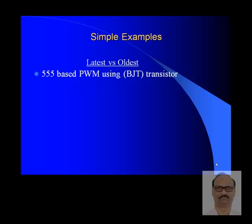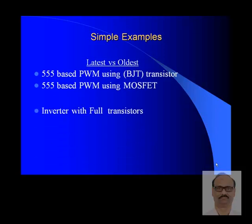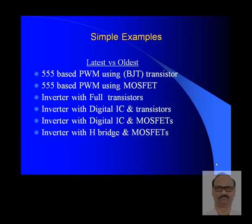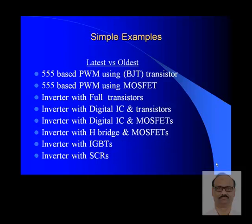We will cover: 555-based PWM using BJT transistor, 555-based PWM using MOSFET, inverter with full transistors, inverter with digital IC and transistors, inverter with digital IC and MOSFETs, inverter with H-bridge and MOSFETs, inverter with IGBTs, and inverter with SCRs. I wanted to cover this as an example of old technology versus new technology — how the product has evolved in power electronics, for an inverter, from the 1970s to 2014.